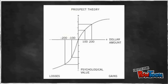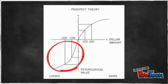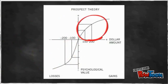Here we see a graphical representation of Prospect Theory. The curve in the upper right represents gains, while the curve in the lower left represents losses. Looking at the curves on either side of the graph, we can see that the decline on the left is steeper than the incline on the right. This indicates that losses are more salient than gains.